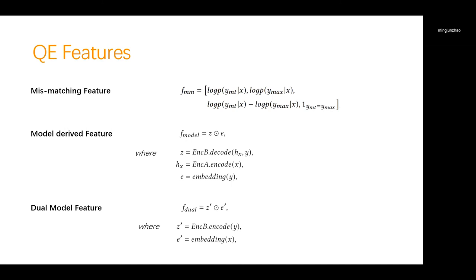The predictors trained on the parallel corpora will serve as feature extractors for the quality estimation task. In Verdi, we include three features in the framework that are mismatching features, model-derived features, and a new design of dual model features. The basic intuition of mismatching features is to measure the difference between the given translation sentences and the prior knowledge of the predictors. Specifically, we include four dimensions in the mismatching features for each token. That are the probability of the given translation token, the probability of the most proper token, the probability difference between the two tokens and the zero-one indicator, whether the two tokens are the same. Following the previous work, the model-derived feature is derived as the element-wise product of the hidden representation Z and the target embedding E, where the hidden representation Z is the decoder output before the final prediction layer.